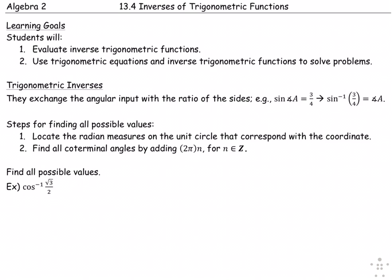To find all possible values of the inverse of cosine of √3/2, we have to consider where √3/2 is an x-coordinate on the unit circle. Because the radian measure of √3/2 is positive and cosine deals with the x-axis, we're looking at quadrants 1 and 4. Each have an ordered pair with an x-coordinate of √3/2.